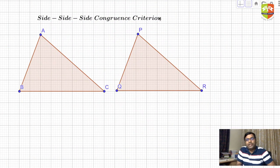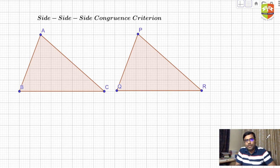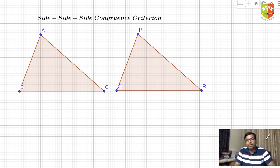Welcome again to another session on congruent triangles. In the previous session we covered one criterion — ASA — and how to prove it, and also saw a corollary to that criterion, which was AAS congruence criterion.